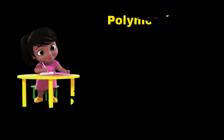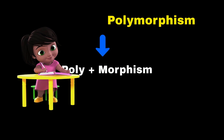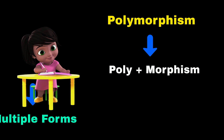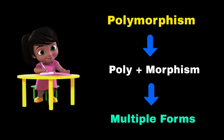The word polymorphism is a combination of two different words: poly and morphism. Poly means multiple and morphism means forms or state. So polymorphism in general means one object can have multiple forms.